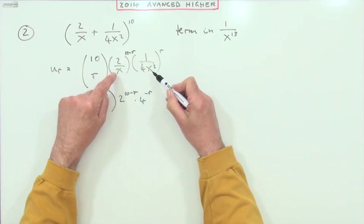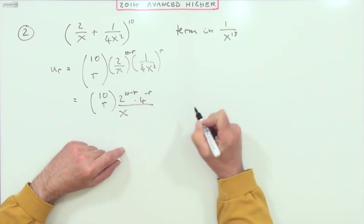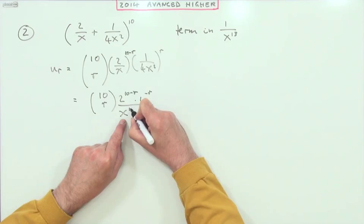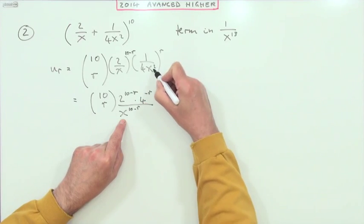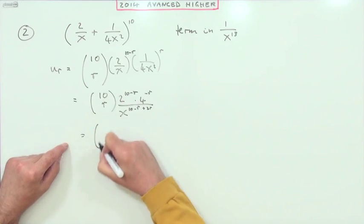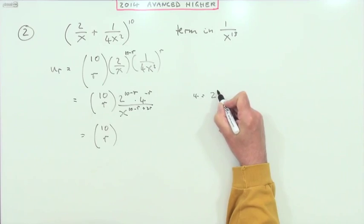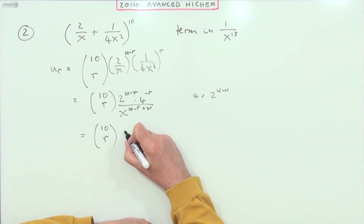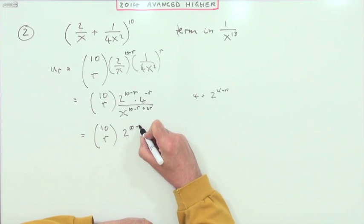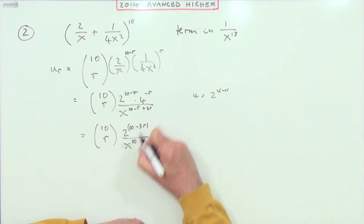It's just a case of all the answers to this - all the terms are going to have x in the denominator. It'd actually be neater to write the x underneath rather than have the x on top with negative powers. So what I'd have underneath would be I've got 10 minus r underneath and that squared, that'll be 2r. Now 4 is 2 squared, so that's 2 to the 2 times negative r. That will be 2 to the power 10 minus r minus another 2r, so that's 2 to the 10 minus 3r over x to the power 10 plus r for U_r.